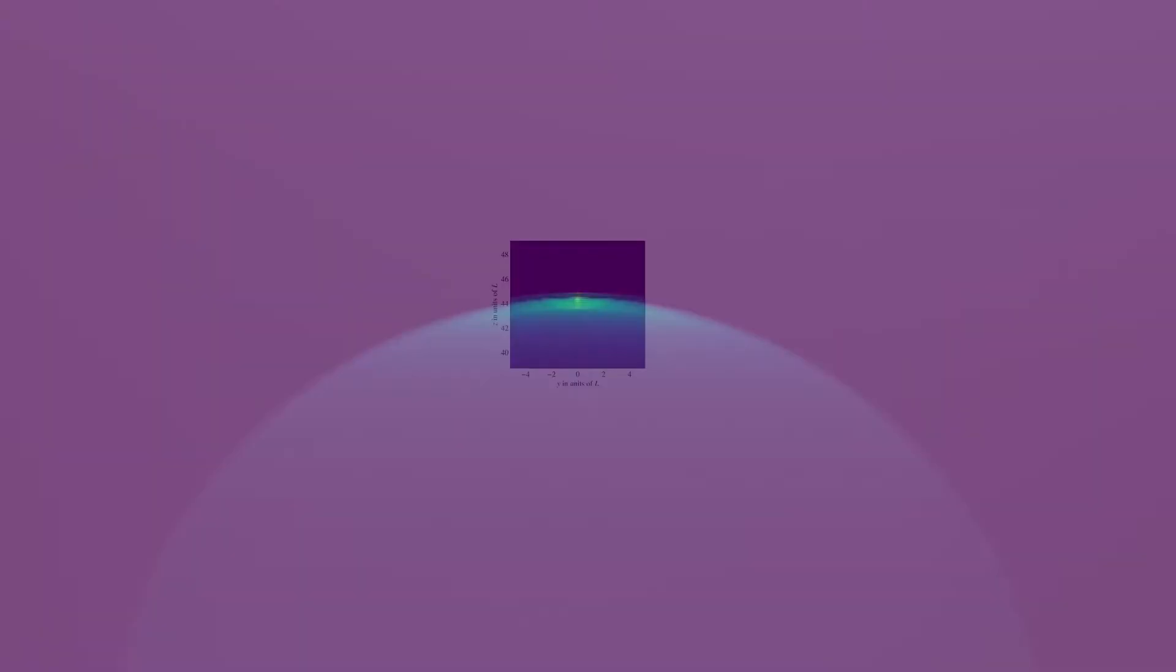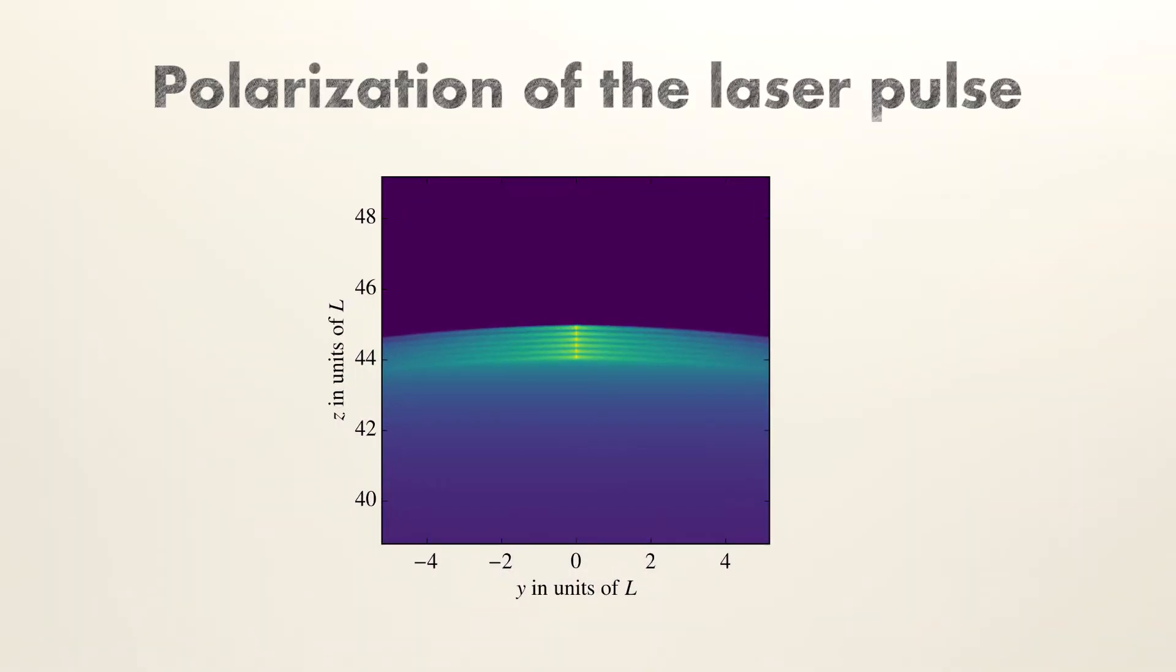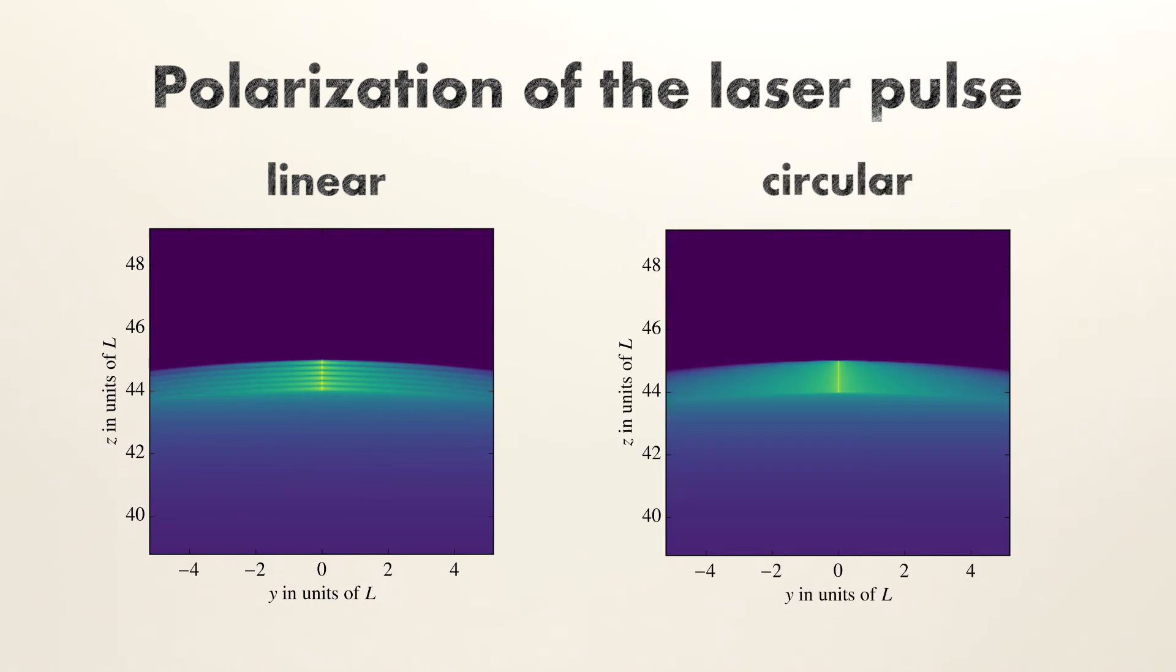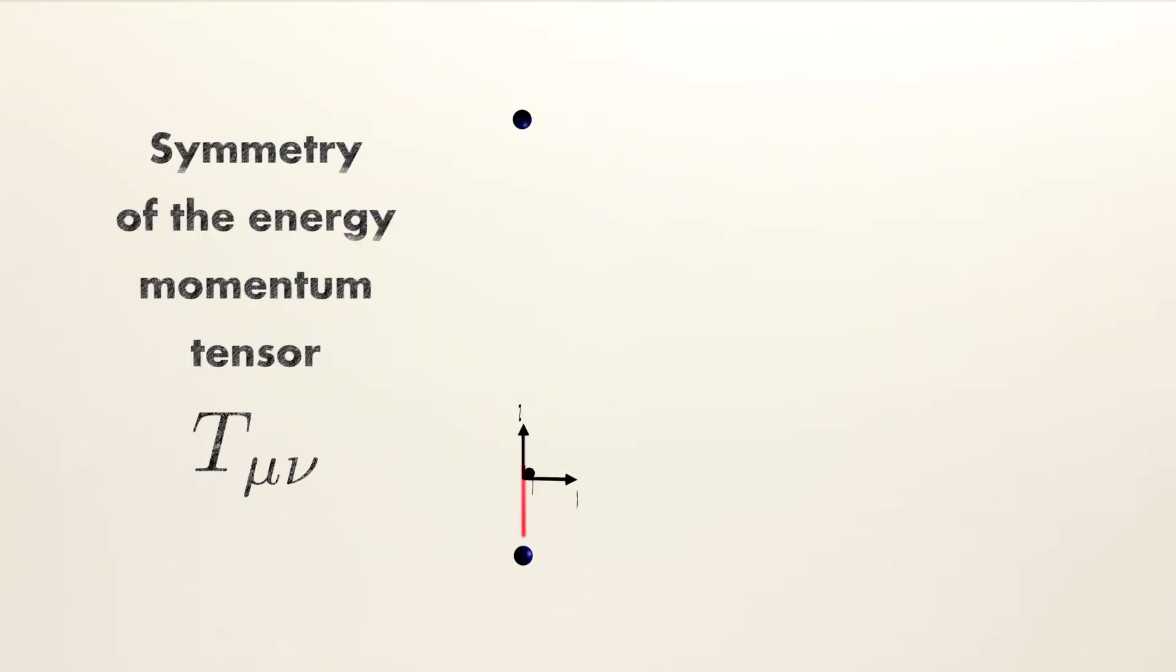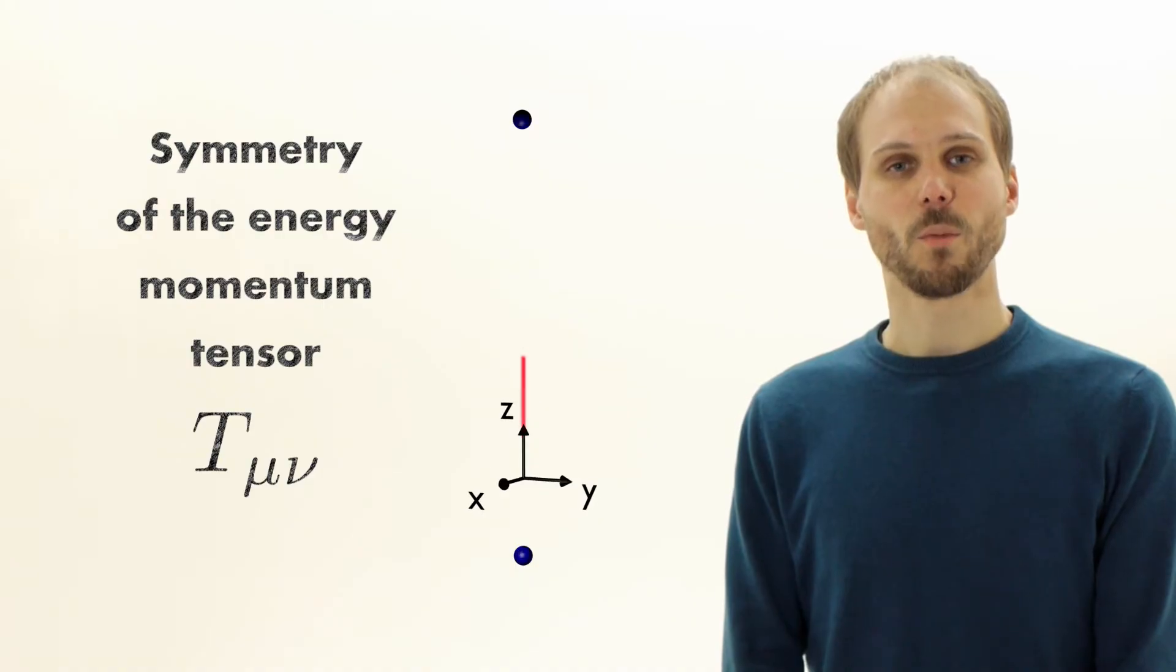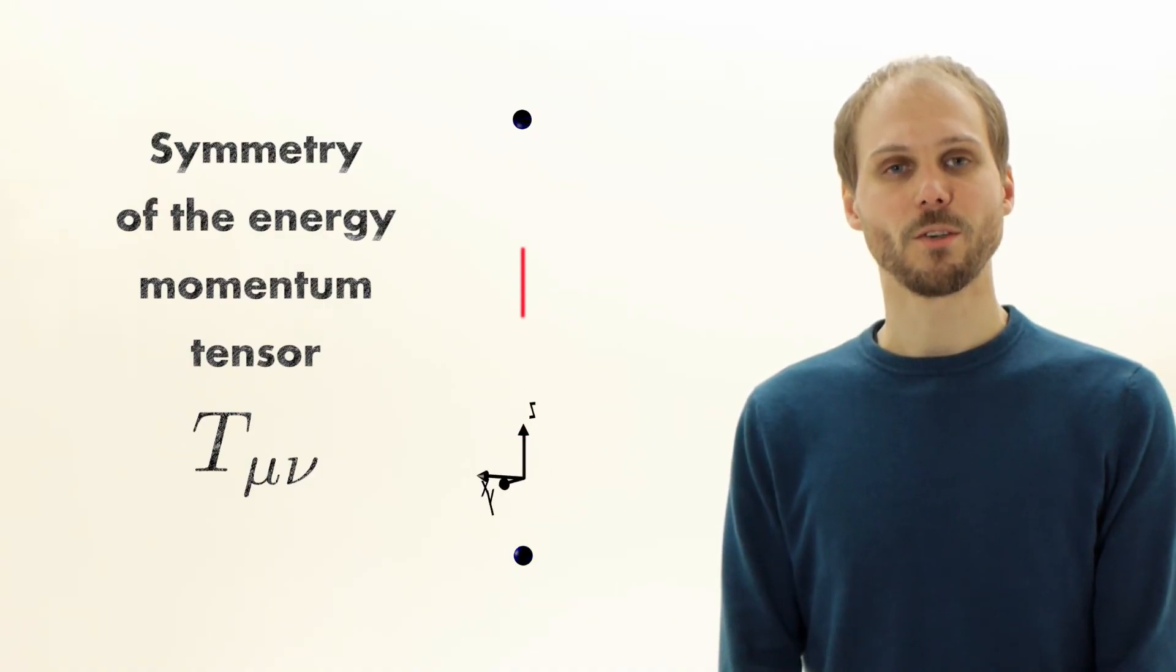An interesting observation is the effect of the polarization of the laser pulse. We find that the metric perturbation shows modulations for linear, but not for circular polarization. Because the whole problem is rotationally symmetrical, the metric perturbation is independent of the polarization direction.